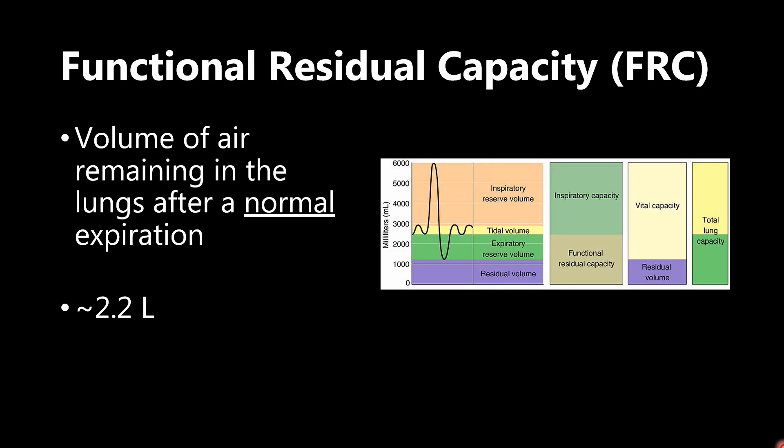Next, we have functional residual capacity, which is one of the ones that I said was a little bit higher yield. This is the volume of air remaining in the lungs after a normal expiration. So we have it right here, functional residual capacity. It's about 2.2 liters. I haven't seen that number come up very often, but try to remember it just in case. The volume of air remaining in the lungs after a normal expiration.